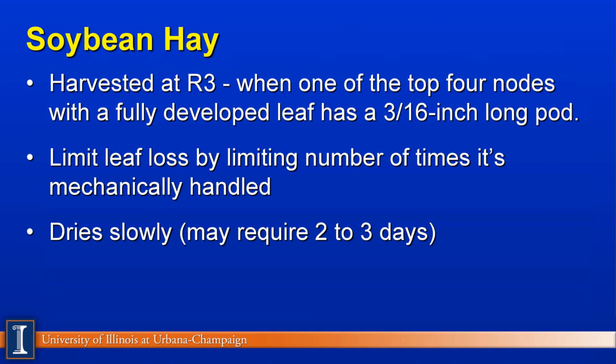A quick word about soybeans for hay. The stage of maturity is the same — about R3. The real key factor here includes leaf loss. You really can't rake or move this product through mechanical handling, as you will lose the leaves. The leaves are high value, and you can't wait for leaf loss to occur because you're going to lose lots of nutrients due to drought, wind, or other factors. This product can be quite wet and may take two or three days to dry down before baling. It's a little more difficult hay to handle, and you may need to look at a propionic acid preservative to reduce mold risk.